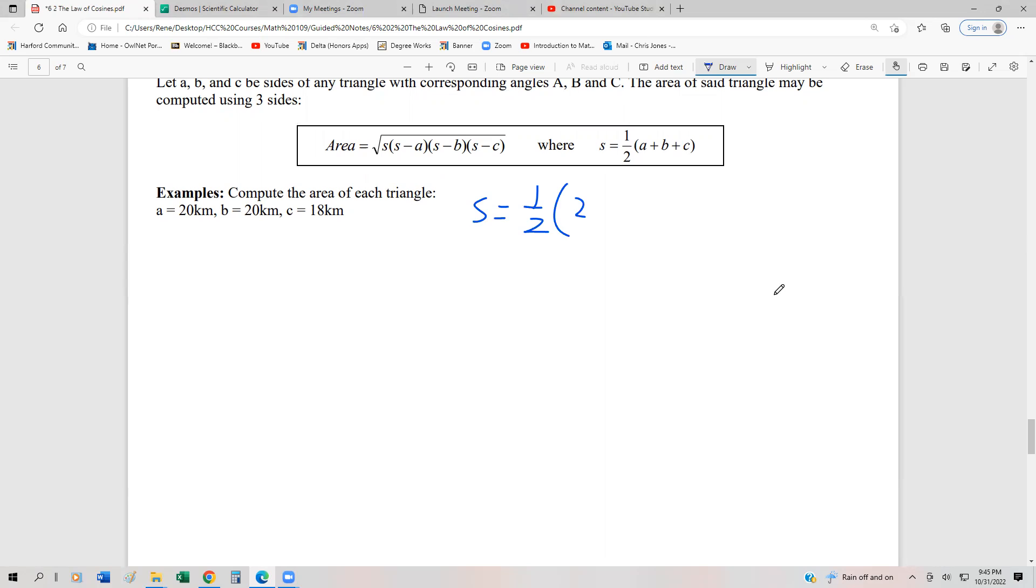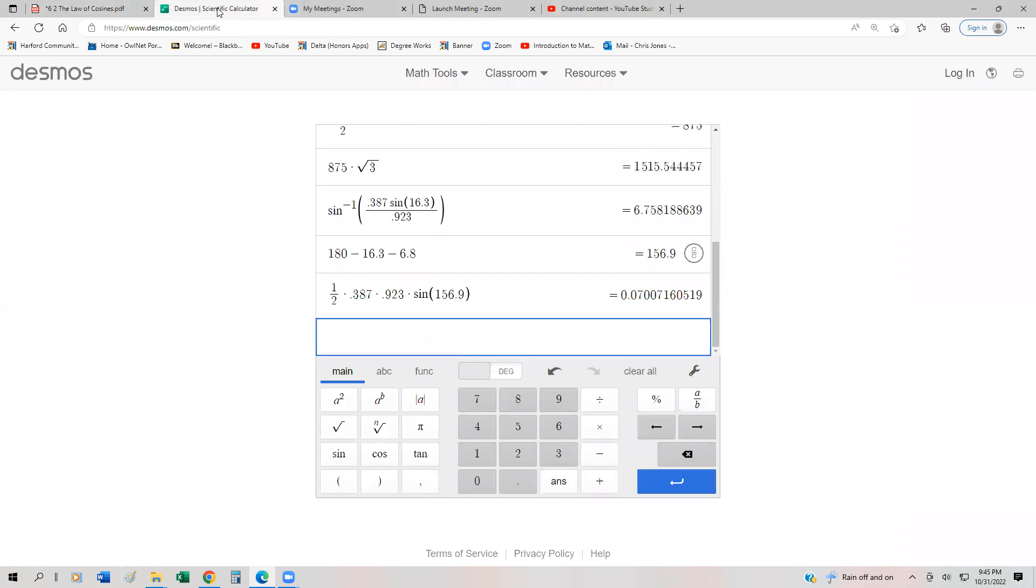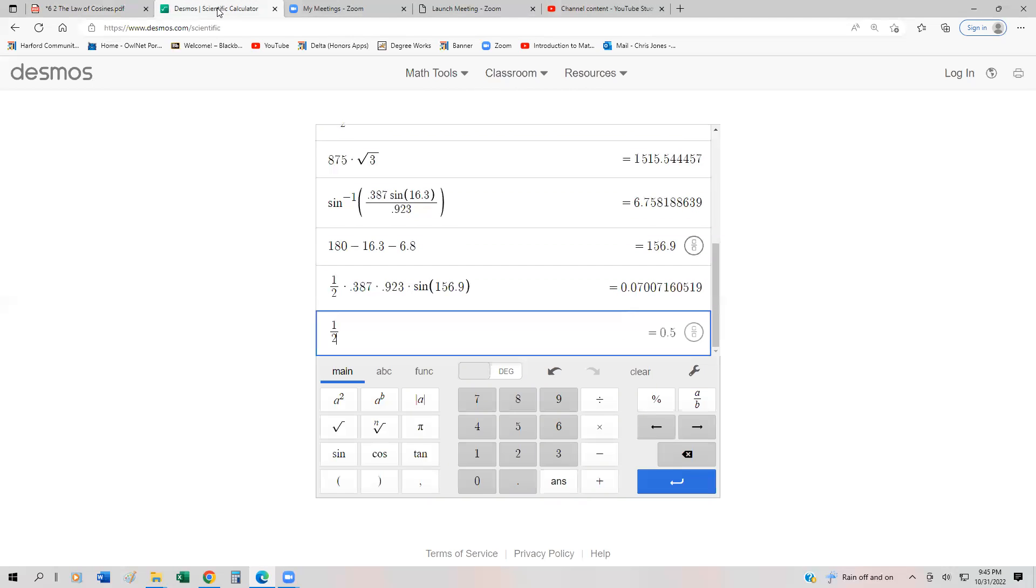So that's half of the sum of the sides: half of 20 plus 20 plus 18. Now we know 20 plus 20 plus 18 is going to give us 58, so half of 58 should be 29. But in case we don't trust that, we should just go to our calculator and take half of 20 plus 20 plus 18, and that does indeed give us 29.